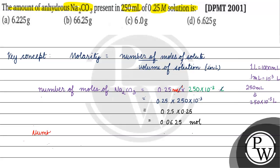The number of moles is basically equal to mass by molar mass. The number of moles coming is 0.0625 moles. We will take the mass as x. What will be the molar mass of Na2CO3?